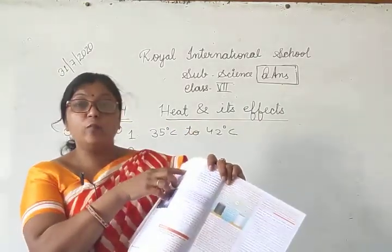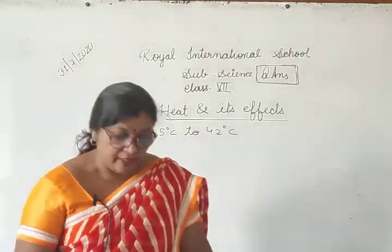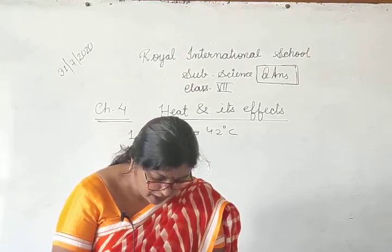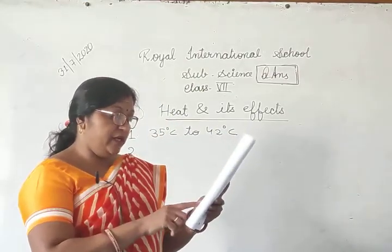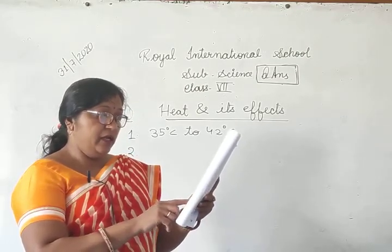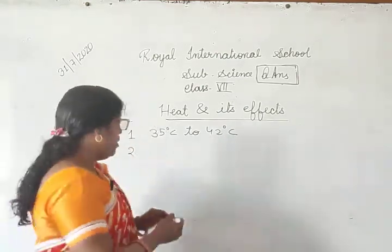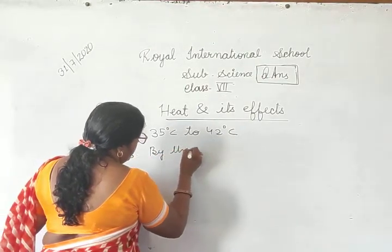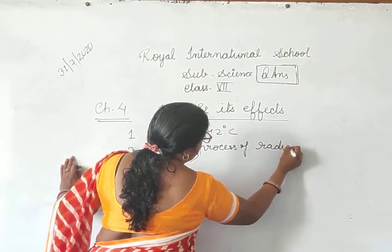You don't have to write figure 4.18, you don't have to write anything extra — only what I say. Third question: how does the heat from the sun reach the earth? The heat from the sun reaches the earth by the process of radiation.